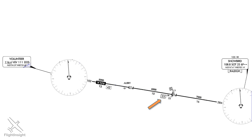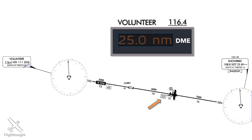One of the main functions of the en route chart is to show airways that we'll use to navigate under IFR. IFR navigation can be accomplished using VORs, so a good deal of information is available on the en route chart to assist with that. Here we see two VORs, the Volunteer VOR and the Snowbird VOR.